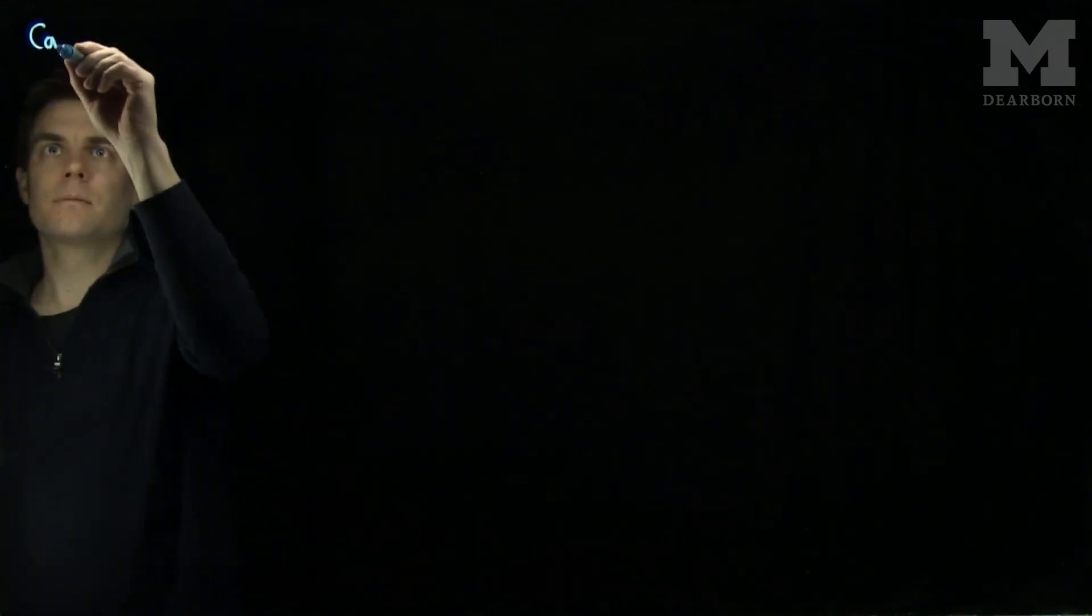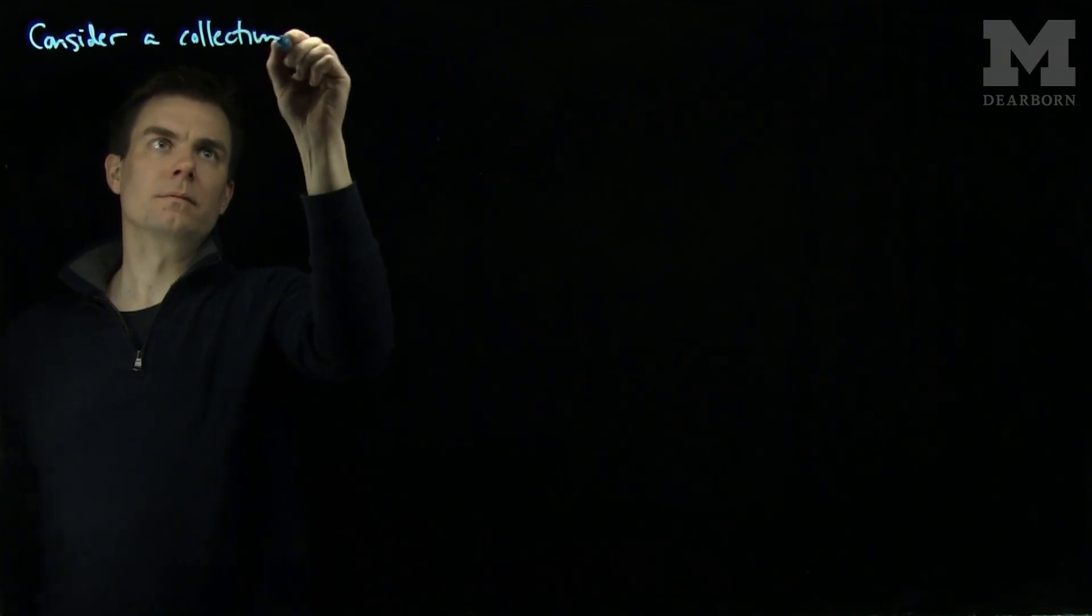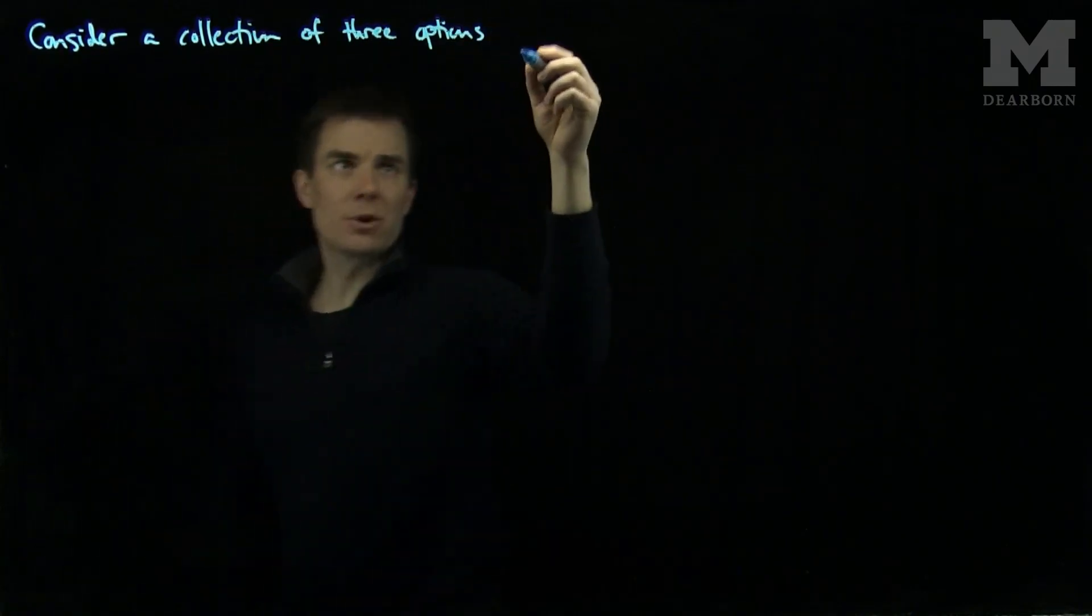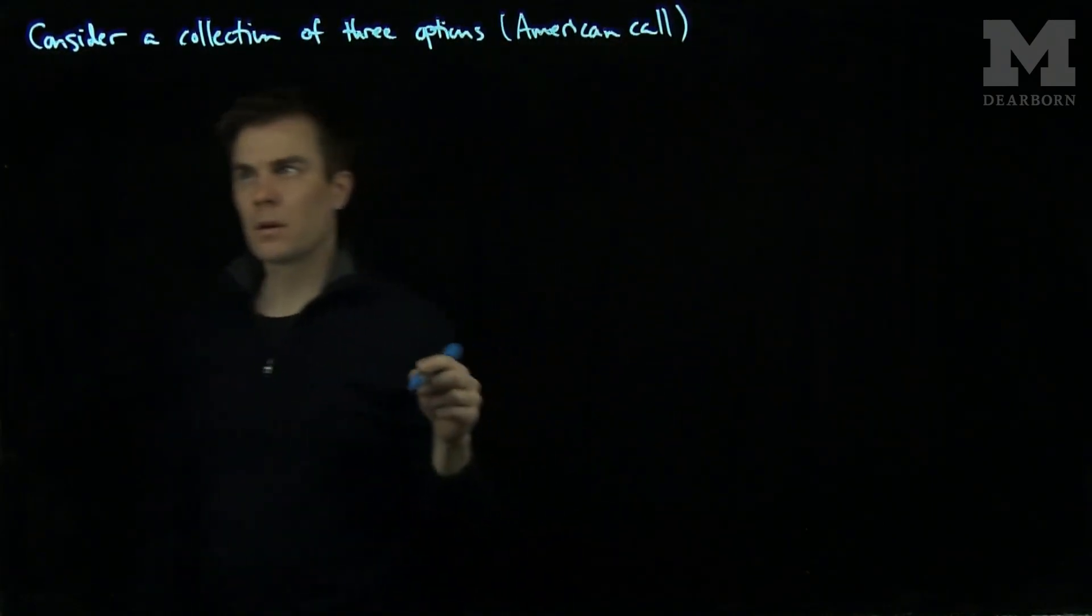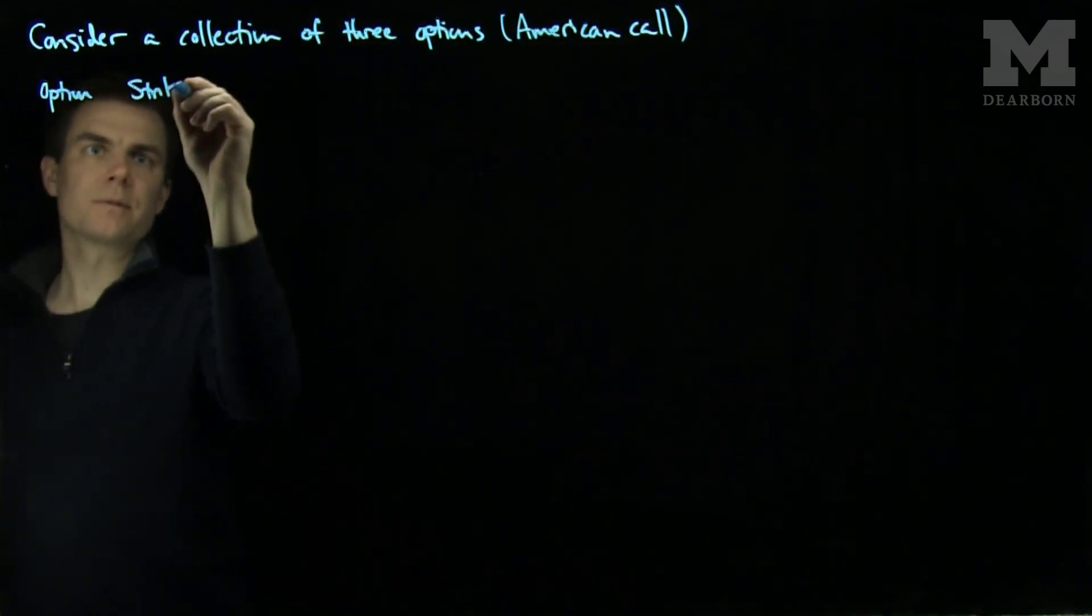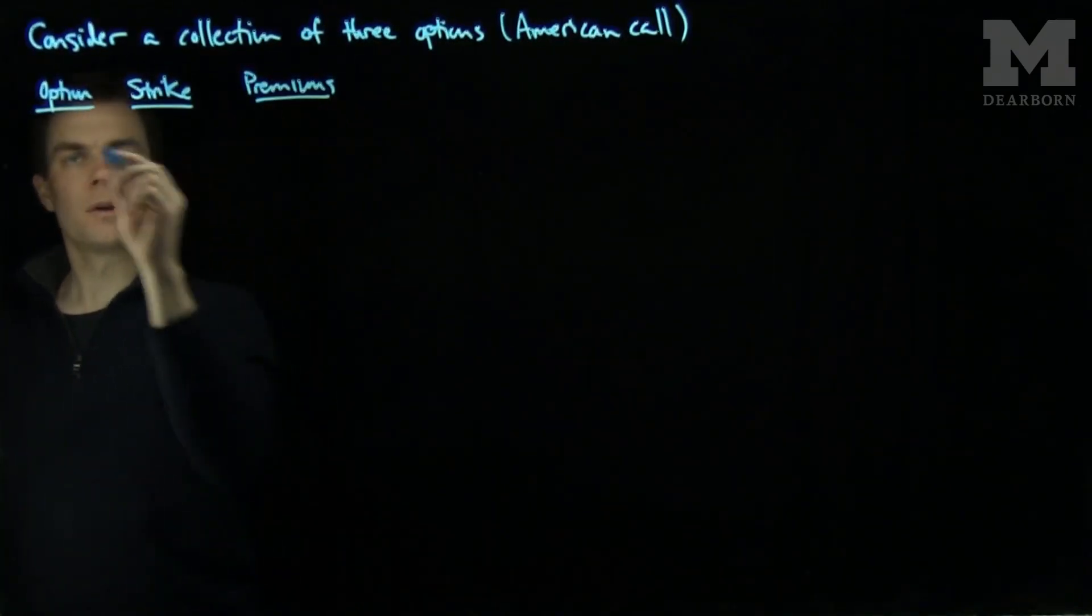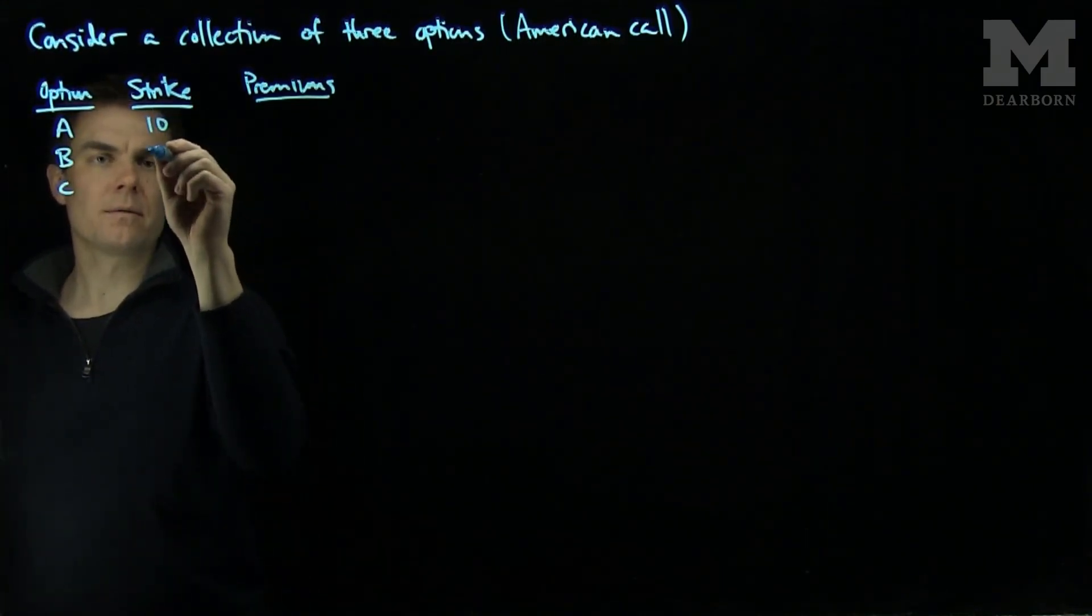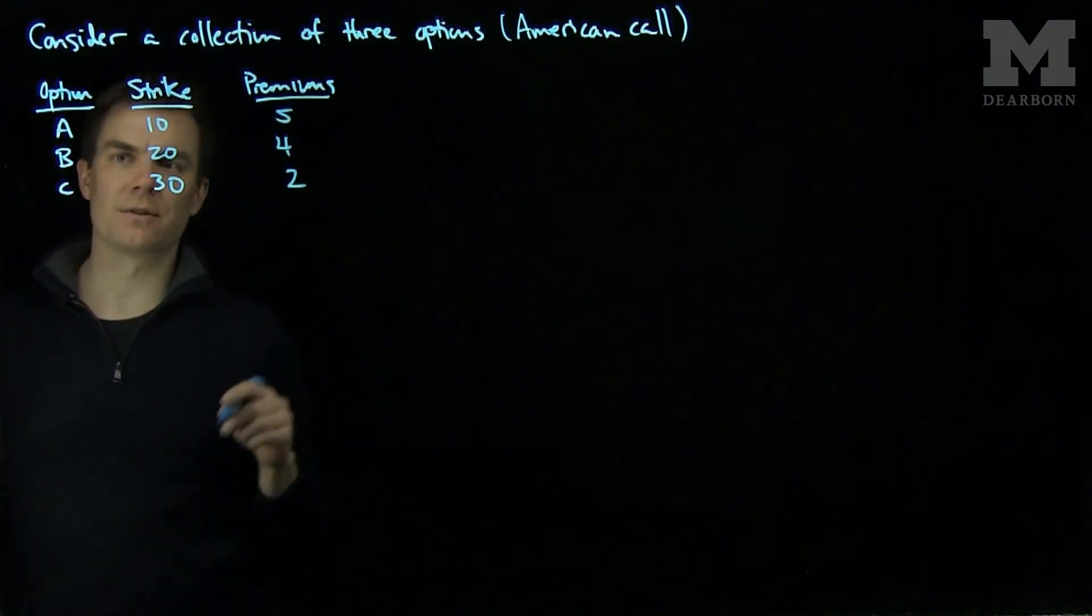Let's consider a collection of three options. These options are going to be American call options. So we have options with strike prices and premiums: option A, option B, option C, with strikes 10, 20, and 30, and premiums 5, 4, and 2.